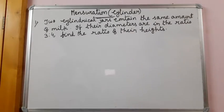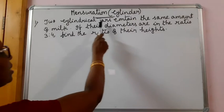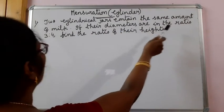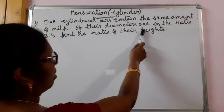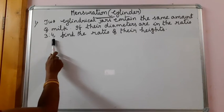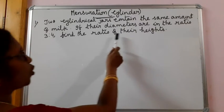The problem is two cylindrical jars contain the same amount of milk. If their diameters are in the ratio 3 is to 4, find the ratio of their heights.